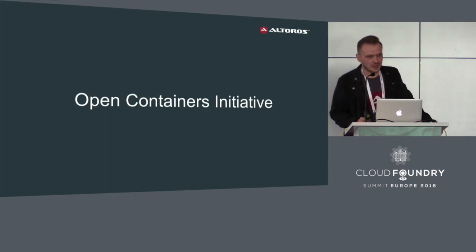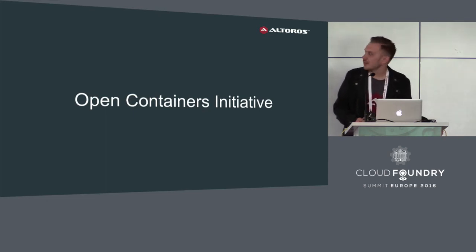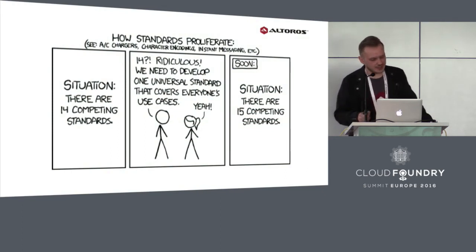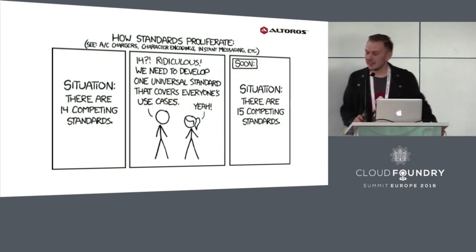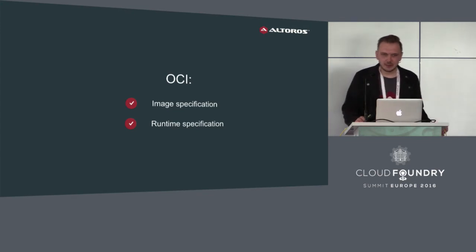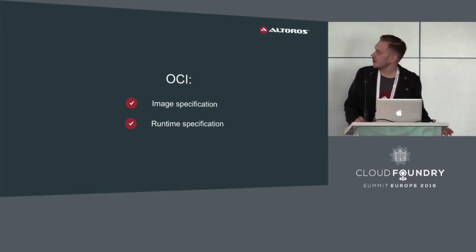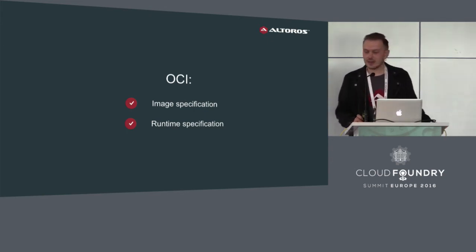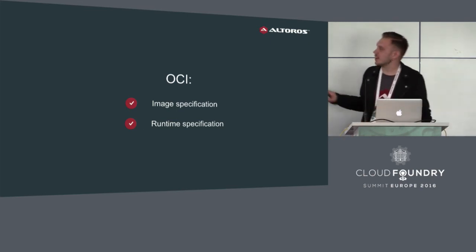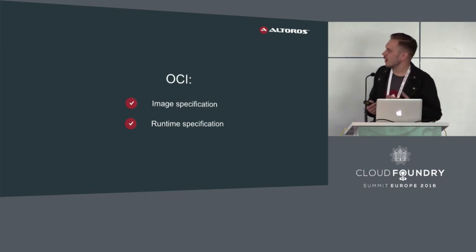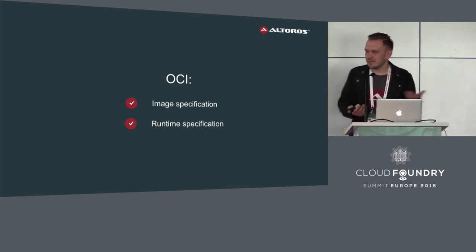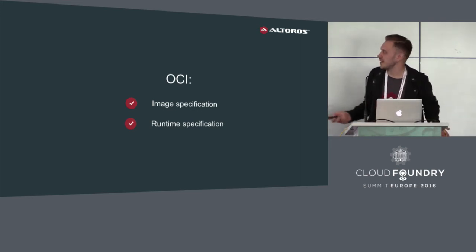In 2015, the Open Containers Initiative appeared to create industry standards around containers — to build open, portable, platform, cloud, and hardware-independent container and runtime formats. The OCI currently provides two specifications: the container image specification and the container runtime specification. The image specification describes how images should be created and stored, and the runtime specification specifies how to run these images.